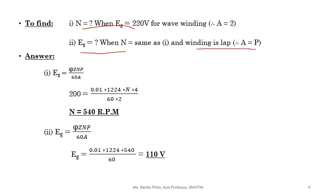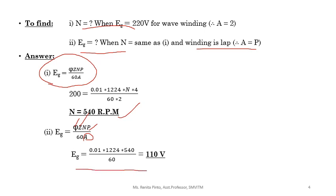For the first question, find speed N. We know EG = ΦZnP / 60A; substitute all other given data and calculate speed. For the second question, calculate the generated EMF where Phi, Z, N (same as calculated in question 1), and P remain the same. Since the winding is lap, A equals P. Substituting that, you will get the generated voltage of 110 volts.